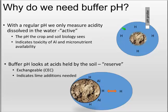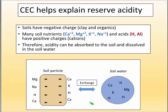When we measure regular pH, we take soil, mix it with water, stick a probe in, and measure all the hydrogen in the soil water. That tells us what the crop and microbes see. But if you try to lime away all this acidity, soils with a high CEC have additional acidity absorbed onto the soil surface. As you add lime, that absorbed acidity can come off and replace it. So having a high CEC means it can hold nutrients — but also holds its acids. We read buffer pH to figure out how much additional acidity is held back.